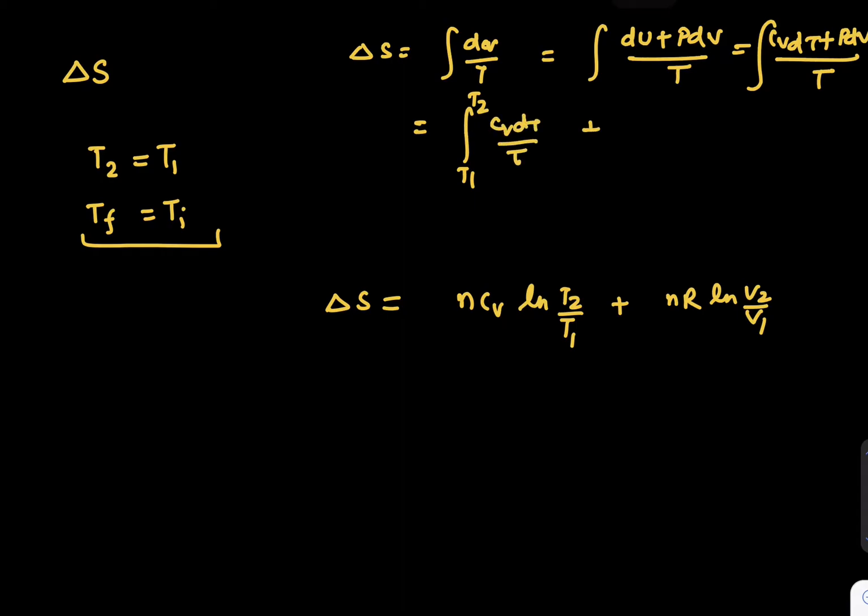And the other part, p dv upon T - assuming ideal gas conditions, p equals RT/V. T gets cancelled and becomes dv upon V, so R dv upon V will result into R ln(V₂/V₁). If you have n moles, all these values will be multiplied by n, hence our answer comes as this.